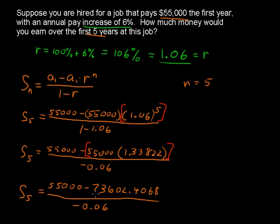Oh, by the way, this 73,602, that would actually be your salary on the fifth year. So you could think of it as the fifth term in the geometric sequence.